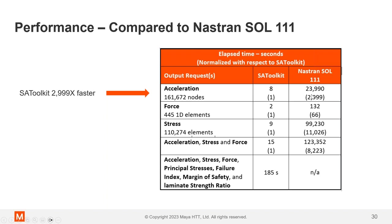For stresses for about 110,000 elements, 11,000 times faster. And then things like the acceleration stress, force, principal stresses, key things, failure indices, margin of safety, laminate strength ratio. This is asking for all these results at once. It took about three minutes for SA Toolkit. Solution 111 can't even provide some of these results. So again, speed, faster turnaround. You can do more, you can do your random analysis more often. You can do it with more complicated models. It just gives you better performance overall.